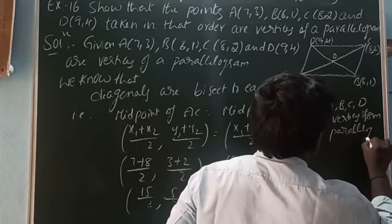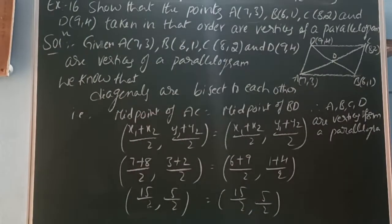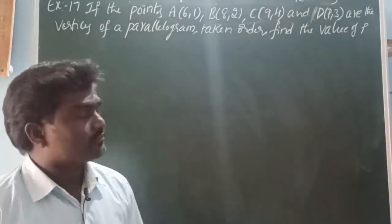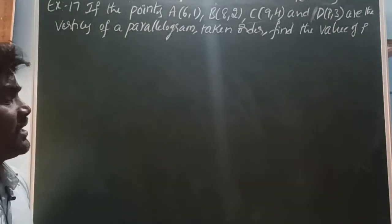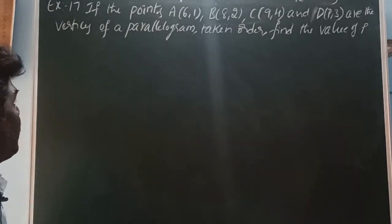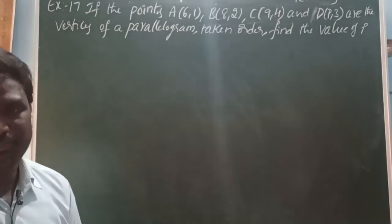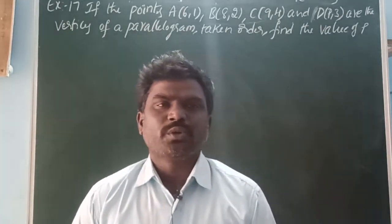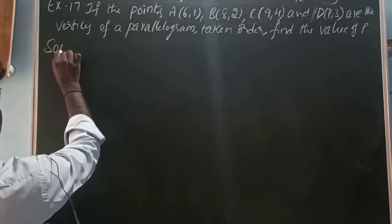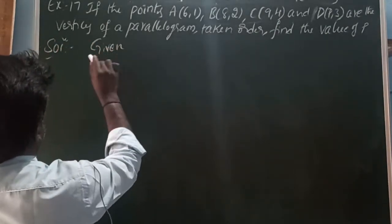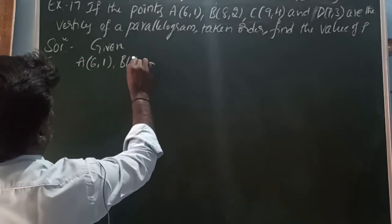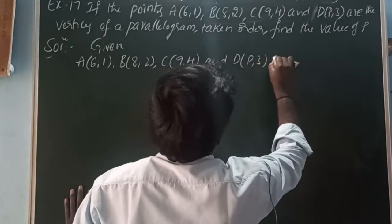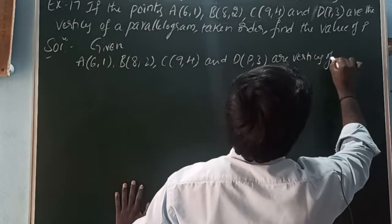Hence proved. Next, Example 17: If the points A(6,1), B(8,2), C(9,4), and D(P,3) are the vertices of a parallelogram taken in order, find the value of P. Given that it is a parallelogram, when it is a parallelogram, the midpoints of the two diagonals are the same. Given: A(6,1), B(8,2), C(9,4), and D(P,3) are vertices of a parallelogram.